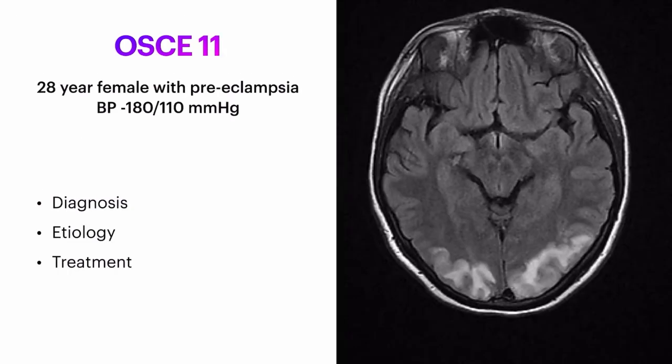Bonus OSCE: a 28-year-old female, known case of preeclampsia during her pregnancy, came with complaint of loss of consciousness. Her BP was 180/110. Write down the image findings you are seeing, the diagnosis, etiology, and the treatment.